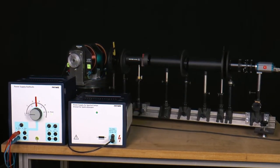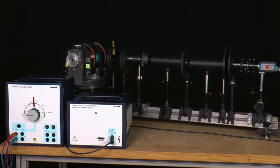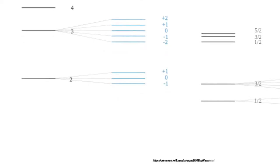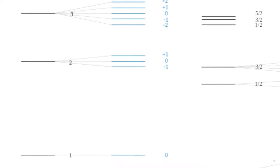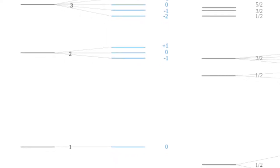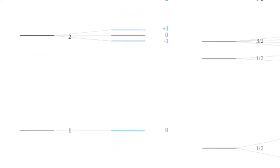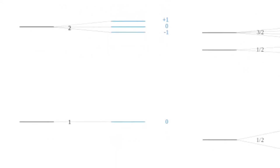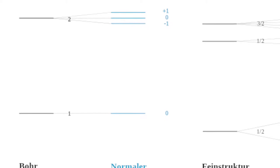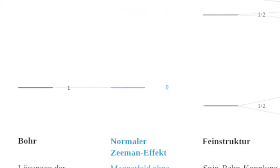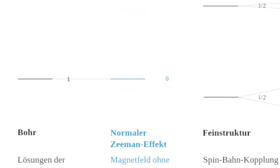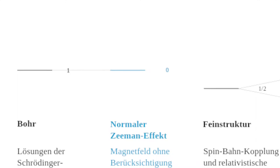Looking at the spectral lines of a material, the individual emission lines can usually be clearly separated from each other. They appear as individual colored lines in the emission spectrum. The opposite would be the absorption lines of a material, which are perceived as individual black stripes in the colored spectrum.